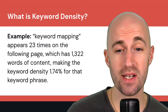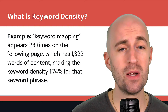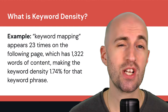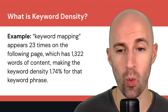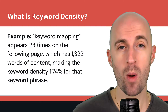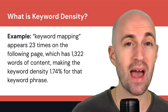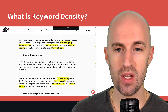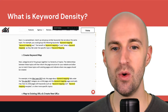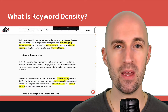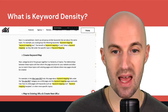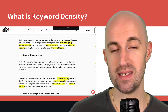Here's another example: the keyword 'keyword mapping' appears 23 times on a page that has over 1,300 words of content, making the keyword density 1.74% for that keyword phrase. Here you can see that page with the keyword mapping highlighted, appearing in multiple places throughout that document.